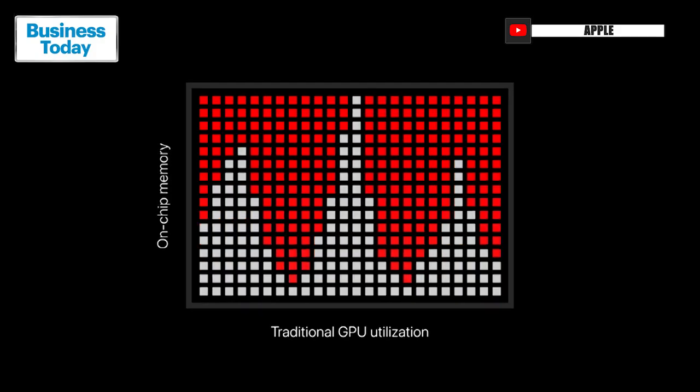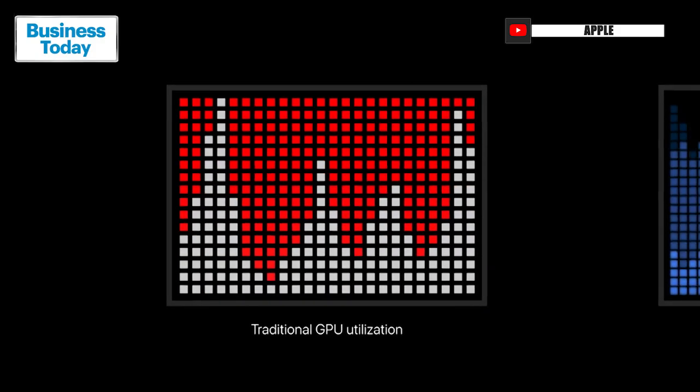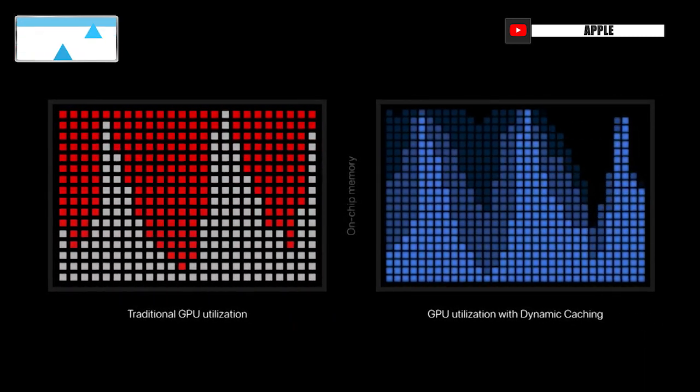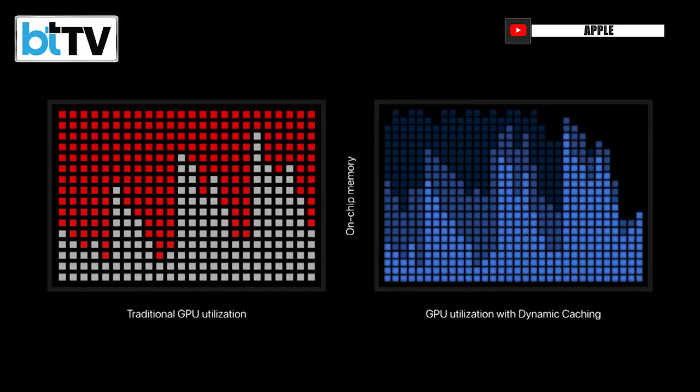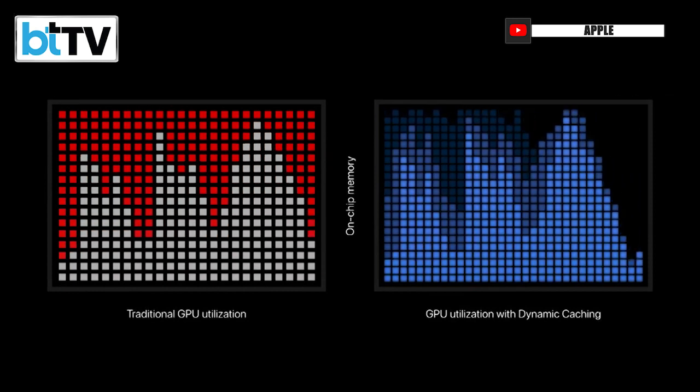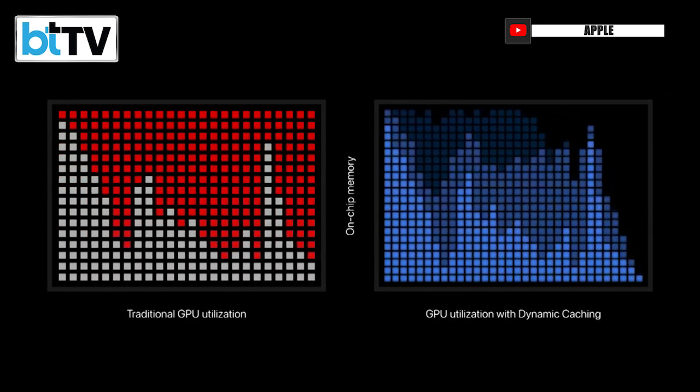In our next-generation GPU, local memory gets dynamically allocated in hardware in real-time, so only the exact amount of memory that is needed is used for each task. This dramatically increases the average utilization of the GPU, which significantly increases performance for the most demanding pro apps and games.